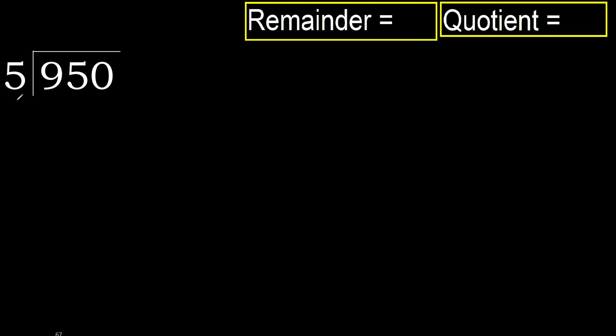950 divided by 5. 9 is not less, therefore work with 9. 5 multiplied by which number is nearest to 9 but not greater? 5 multiplied by 2 is 10 — that is greater. Multiply by 1 is 5, it is not greater. 9 minus 5 is 4.